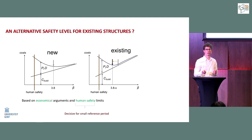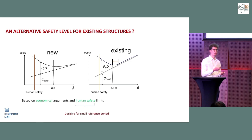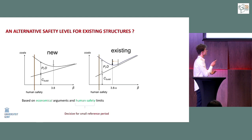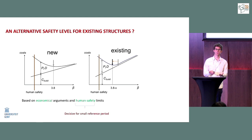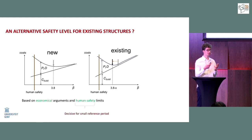How do we determine this target safety level for a new structure? We perform a cost optimization including both the construction cost and the expected cost in case of failure, over a range of different beta values. The total expected cost curve has a minimum at beta = 3.8 for new structures, which corresponds to the classical partial factors of 1.5, 1.35, and 1.15.